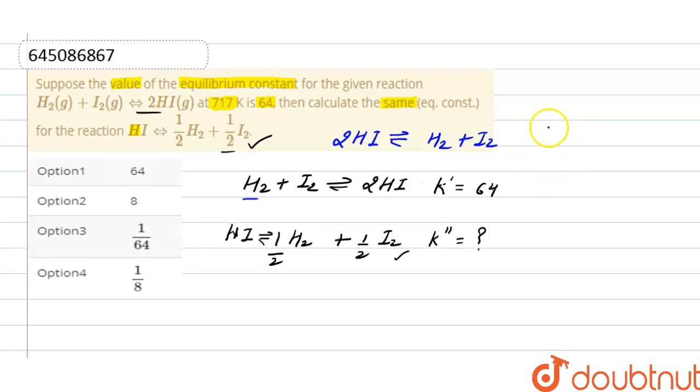So here equilibrium constant also reversed. Now if we multiply this reverse reaction with 1 by 2, this whole reaction with 1 by 2, then we get our main reaction: that is HI gives half H₂ plus half I₂.